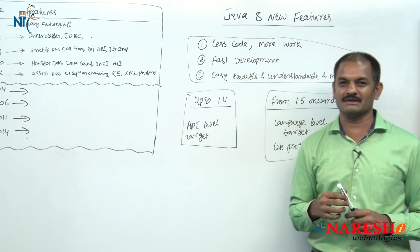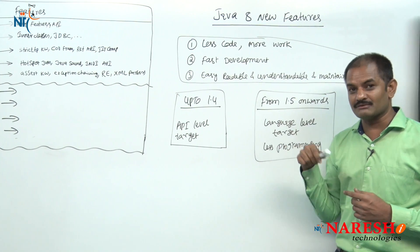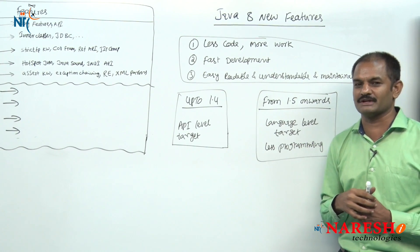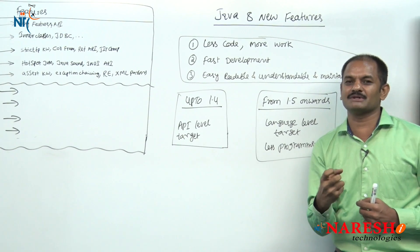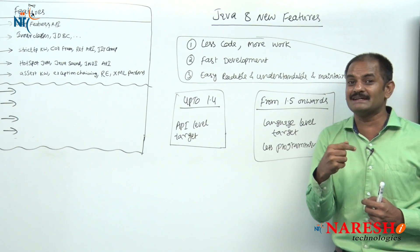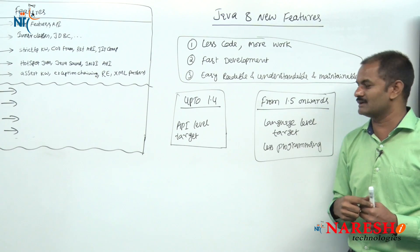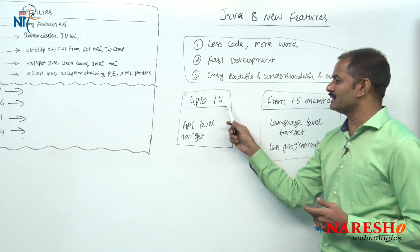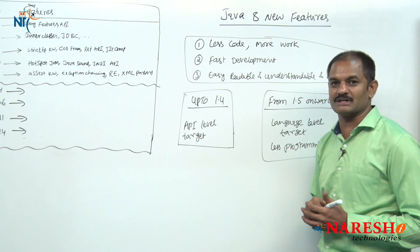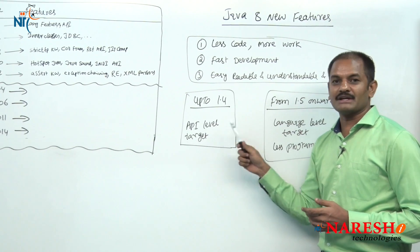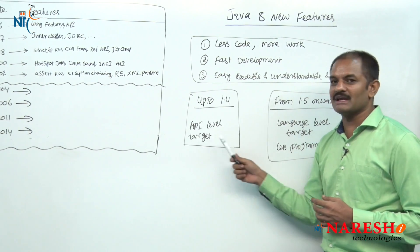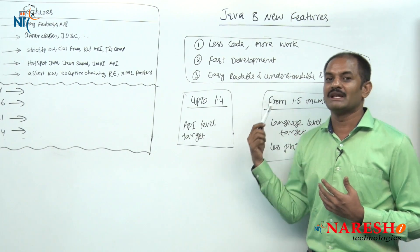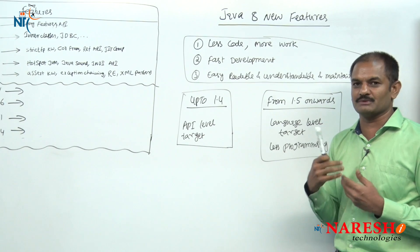What is the point I want to highlight? From Java 5 onwards, the target and focus of Sun Microsystems shifted to how to reduce the number of lines of code typed by the programmer at syntax level — nothing but language level. Up to version 1.4, Sun Microsystems' focus and target was providing reusable code — API level focus. After 1.4, their focus shifted to reducing language-level lines of code.